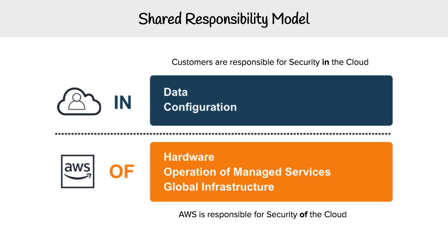Then we have AWS. AWS is responsible for the security of the cloud — the hardware, the operations of managed services, and the global infrastructure. All the things that you can't touch is what AWS is responsible for.